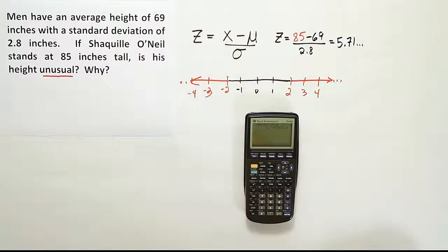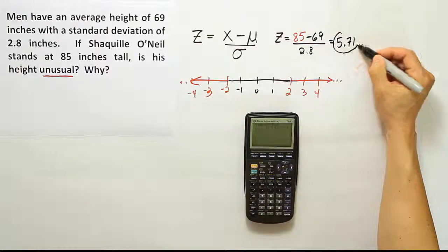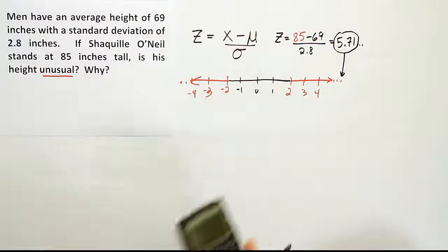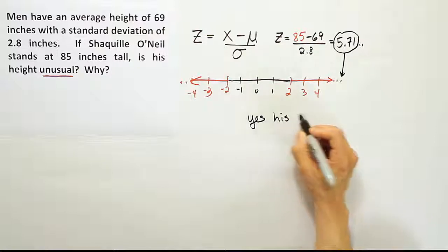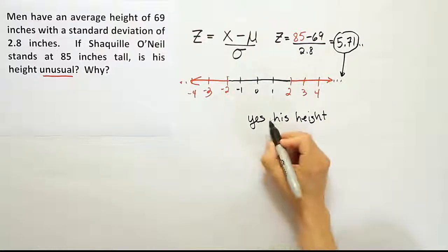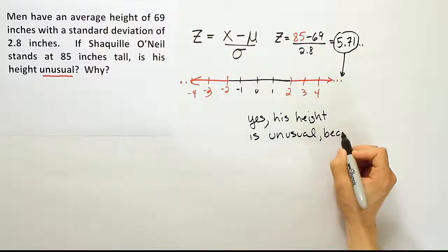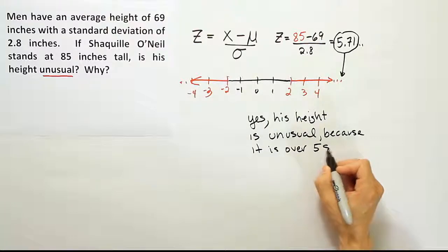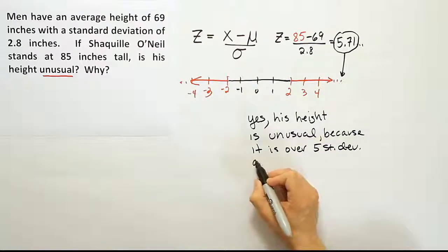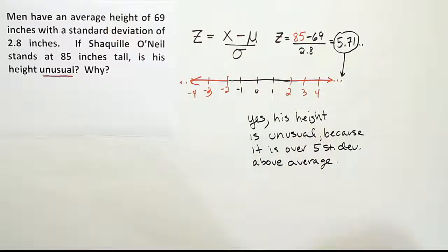So it repeats, it goes on and on. But the point is that 5.71 is definitely clearly within the span on this number line that would be considered unusual. So we're going to go ahead and say that Shaquille O'Neal is unusually tall. So the answer is yes, his height is unusual, and the reason why is because it is over 5 standard deviations above average. So he is actually unusually tall, of course—he's not unusually short, he's unusually tall.